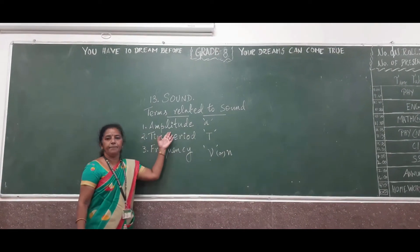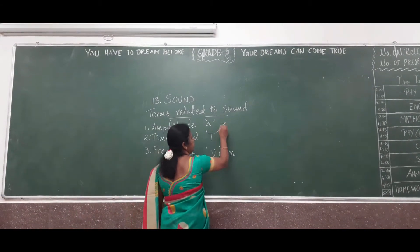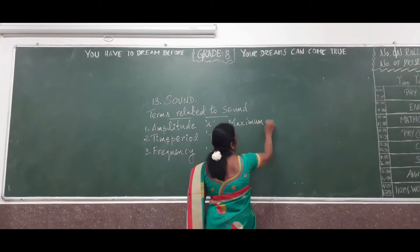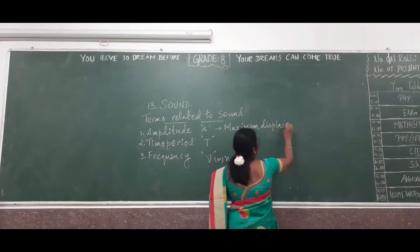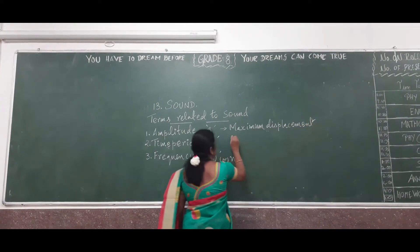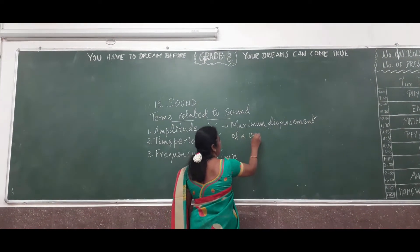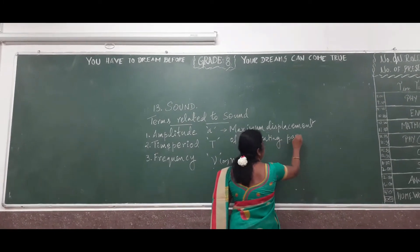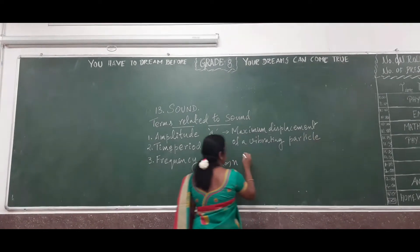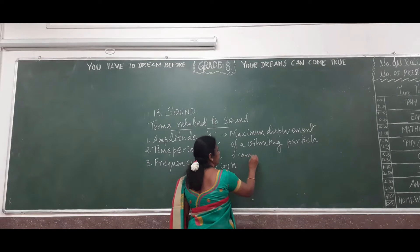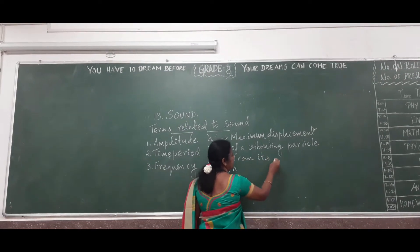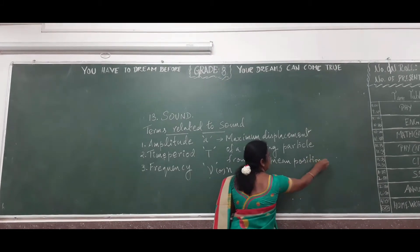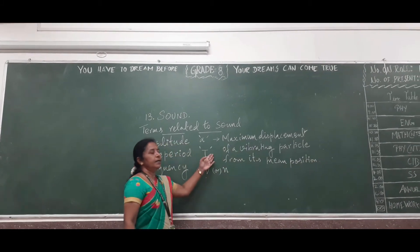First we will see amplitude. Amplitude is defined as maximum displacement - maximum displacement of a vibrating particle from its mean position. This is known as amplitude.